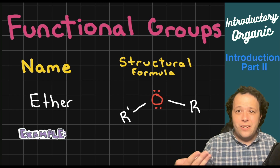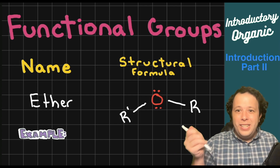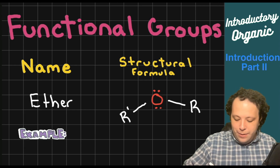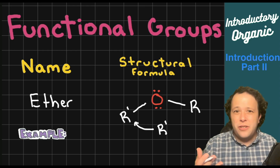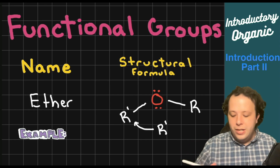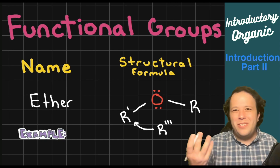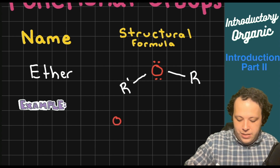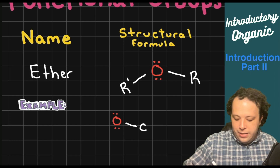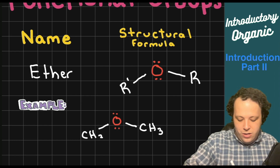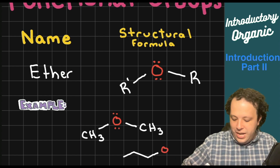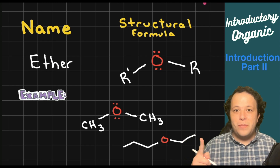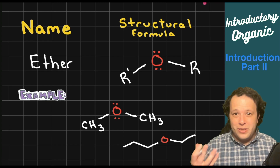The next functional group is an ether. An ether has an oxygen holding hands with a different R group on both sides — the two chains don't have to match. If you see R-prime or R-double-prime, that means the groups are different. Ether always joins two pieces together. For example, dimethyl ether has two methyl groups, or you could have one chain with two carbons and another with three carbons — each one different.